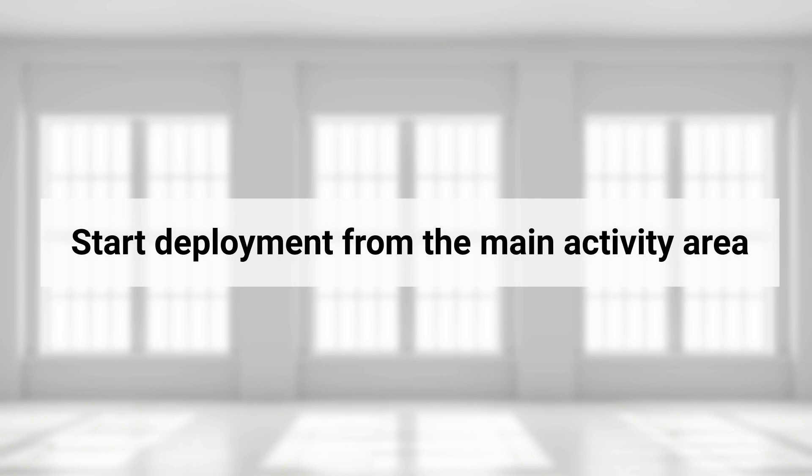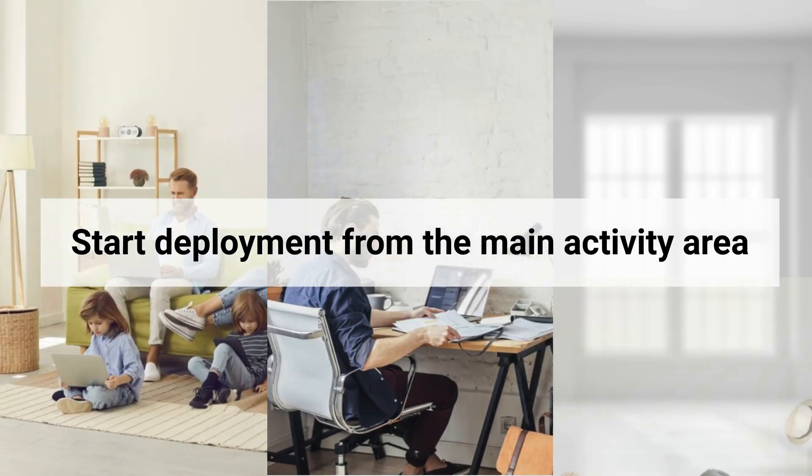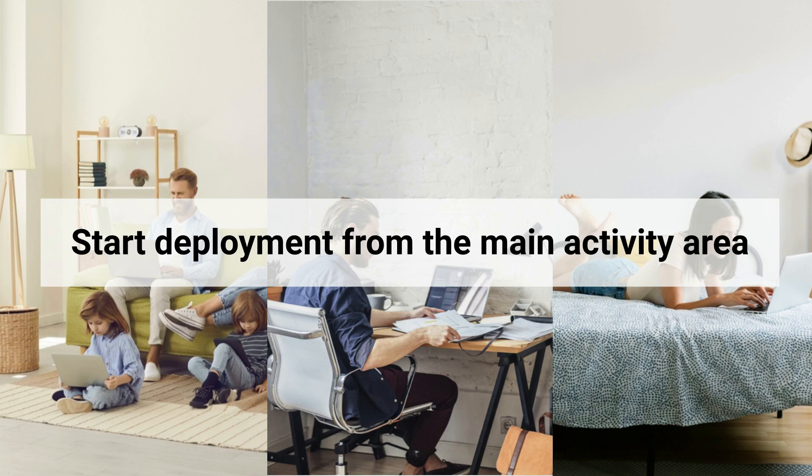Another guideline is to start the placement task at places where users stay most of the time. This can guarantee a smooth Wi-Fi experience for most users. For example, you can prioritize placing the AP in key areas like the living room, study, and bedroom of your house. Compared to evenly distributing the AP across the entire area, this not only makes the deployment task easier and more efficient, but also brings a better experience to general users.